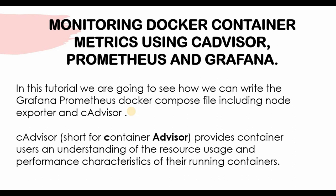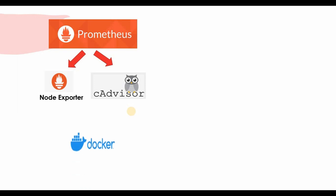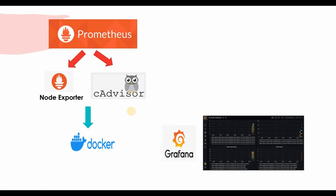cAdvisor can be easily integrated with Prometheus, which is why we are using it in this tutorial. The setup will have a Prometheus container running along with Node Exporter and cAdvisor. We will have a prometheus.yaml file scraping content from Node Exporter and cAdvisor. All of these — Prometheus, Node Exporter, cAdvisor, and Grafana — will run as containers on Docker, with Docker as the base node.